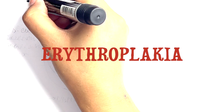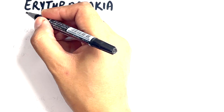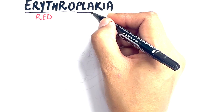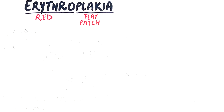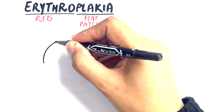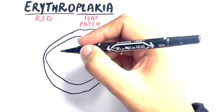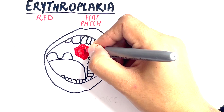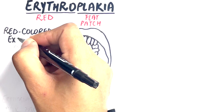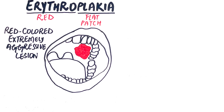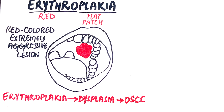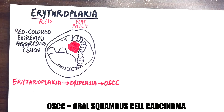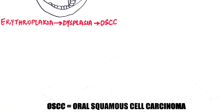Oral erythroplachia, or simply erythroplachia, is derived from 'erythro' meaning red and 'plachia' meaning flat patch. Among the various potentially malignant disorders, oral erythroplachia is a red colored and extremely aggressive oral lesion that exhibits increased dysplastic changes, hence presenting a significant concern as dysplasia ultimately transitions into oral squamous cell carcinoma.